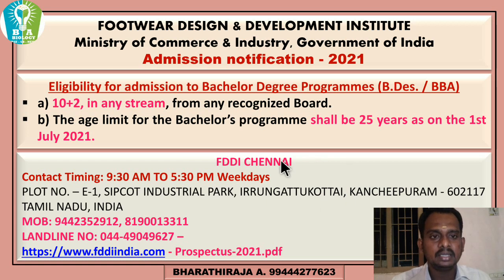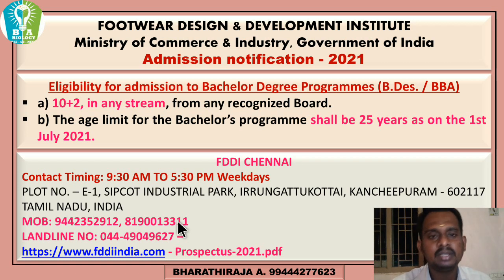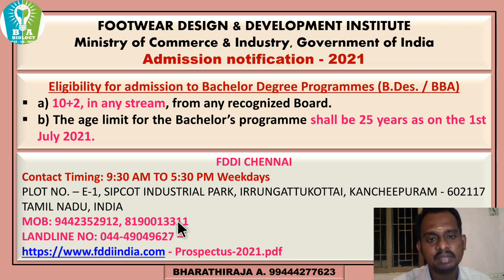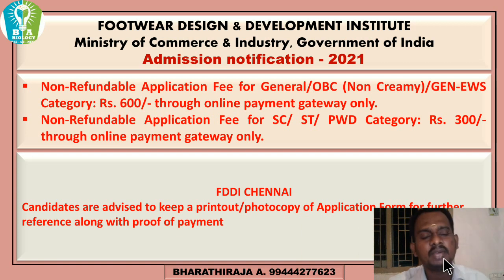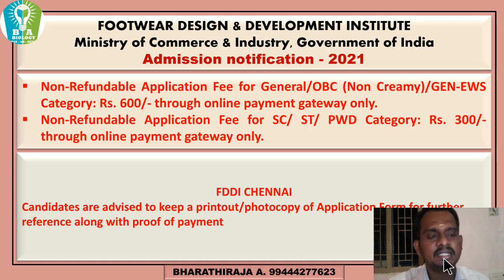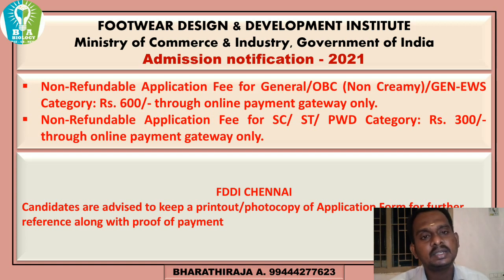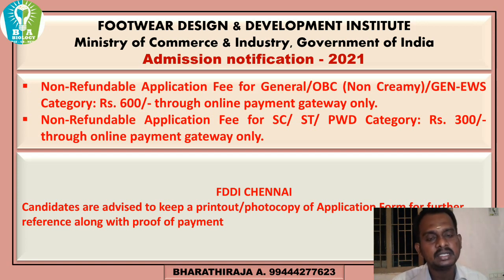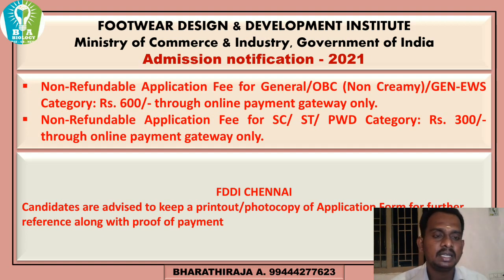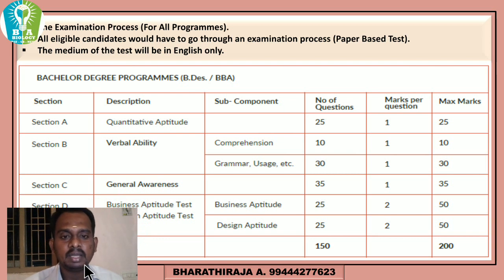For FDDI address and phone number, contact during weekdays 9:30 AM to 5:30 PM. To apply online, OBC candidates can apply with online payment. SC/ST and other candidates pay 300 rupees through online payment. You can download the application form, pay the fees, get the receipt download, and complete the admission process.